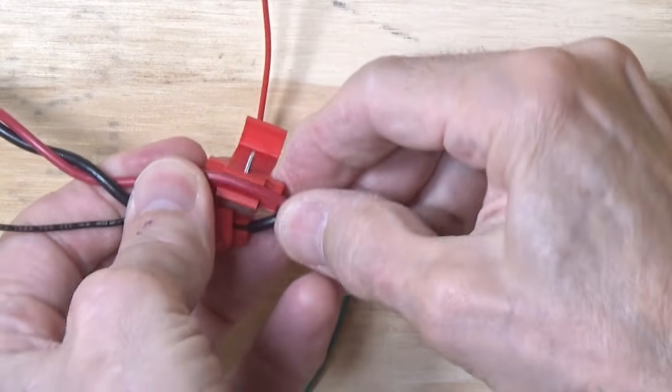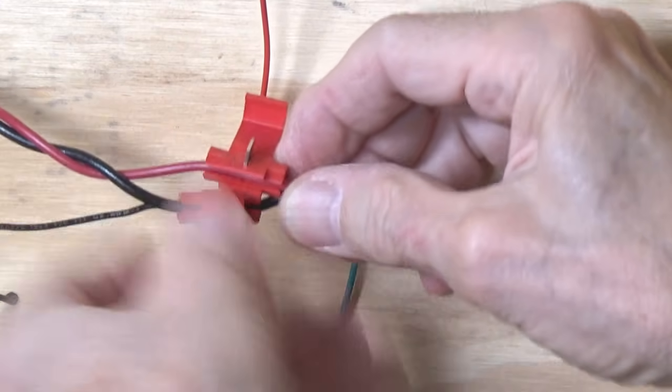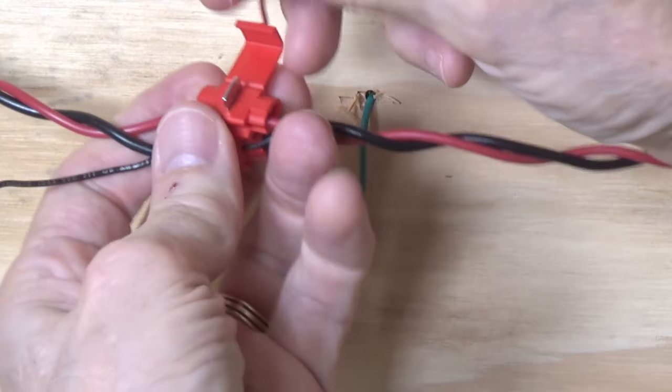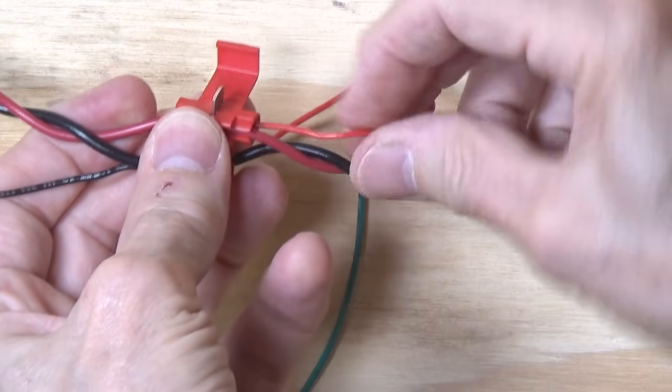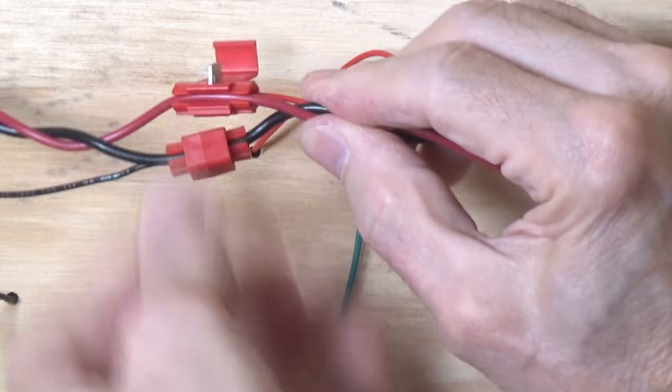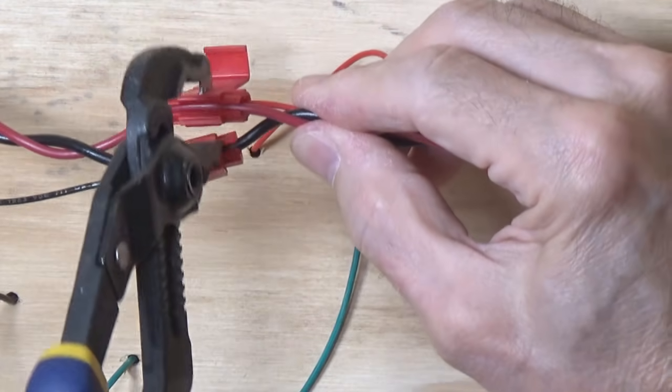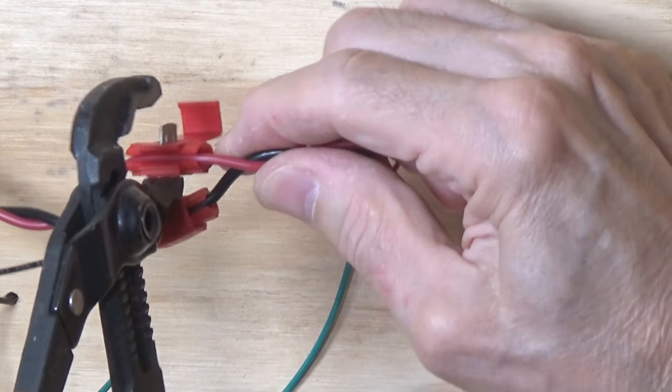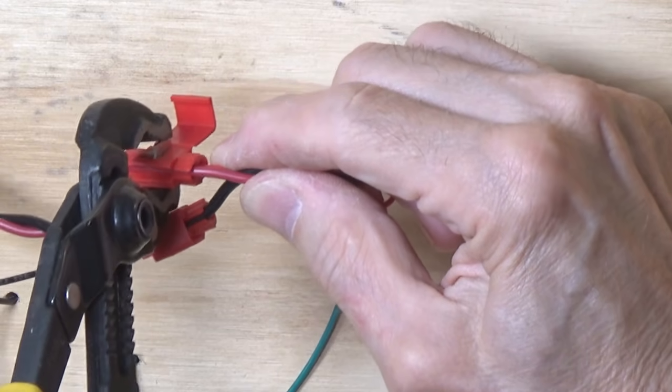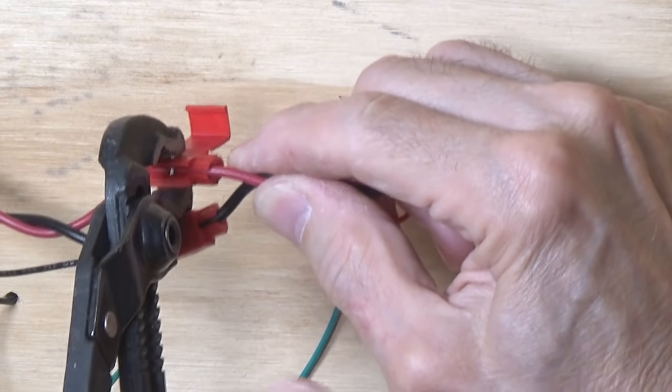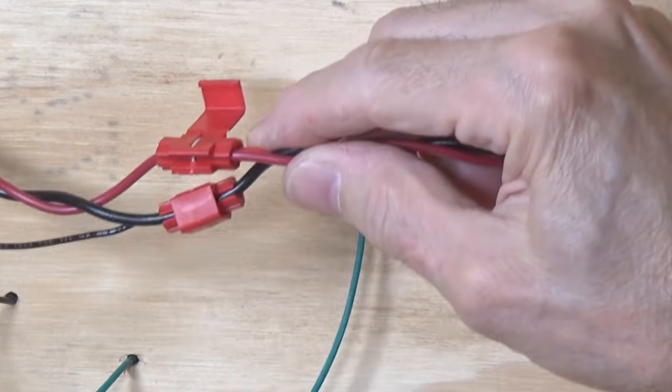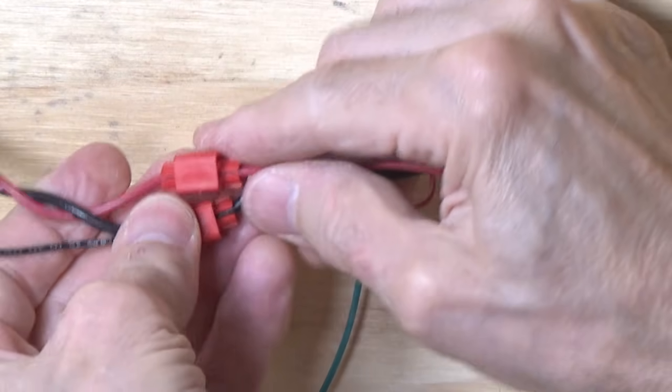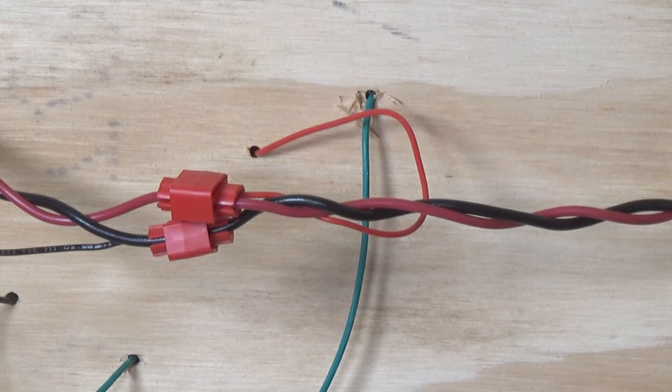Basically, pop the connector over the running wire like that, and then find the hole for your feeder, put it in like so. Holding both, take your pliers and crimp. And then close the lid.